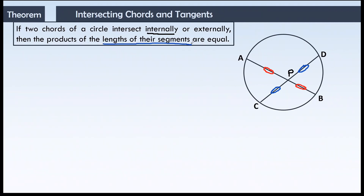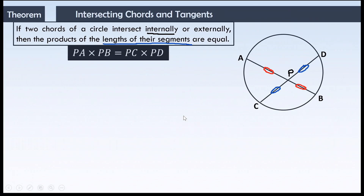According to the theorem, when the chords are intersecting internally, the product of the lengths of their segments — the two segments AP and PB — is equal to the product of the segments of the other chord CD. So the equation of this theorem is PA into PB is equal to PC into PD.